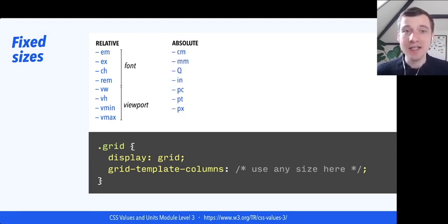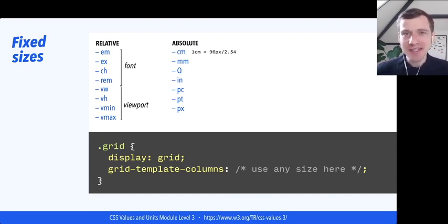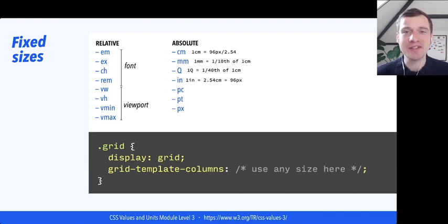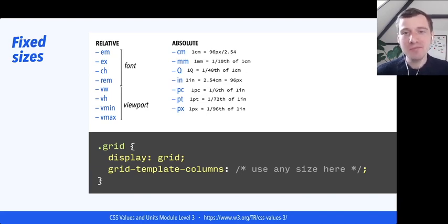You can also use absolute sizing — in centimeters, millimeters, the q unit, inches, picas, points, and pixels, which all kind of come down to pixels. Looking at what the spec says: a centimeter is actually 96 pixels divided by 2.54. Millimeters are a tenth of that, and the q is a fourteenth of that. An inch is 2.54 centimeters and equals 96 pixels — hence the definition for centimeters. Picas and points are parts of that, and pixels are also a portion of the inch. They all interrelate together, and I assume there are good historical reasons for that.